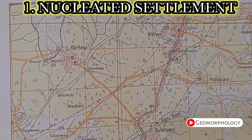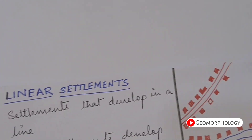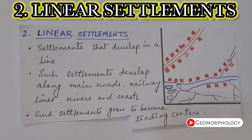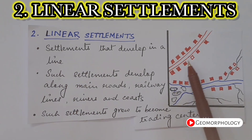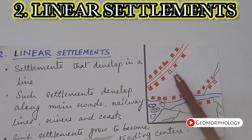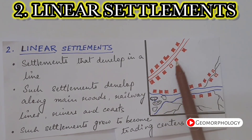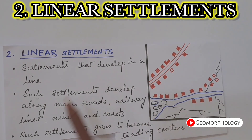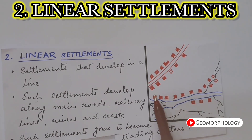The next type of settlement is the linear settlement. A linear settlement is one that has developed in a line — as the name itself suggests, the houses develop in a line. These settlements have come up along major roadways, railways, or sometimes even rivers and coasts. They follow the line of the road, the railway line, or the river.